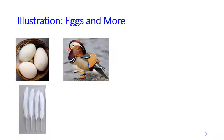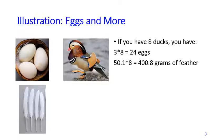Suppose not only collecting their eggs, you also collect their feathers. So now if you have 8 ducks, you have 24 eggs same as before, each duck gives you 3 eggs. And then suppose each duck produces 50.1 grams of feather. So now if you have 8 ducks, you're collecting 400.8 grams of feather.